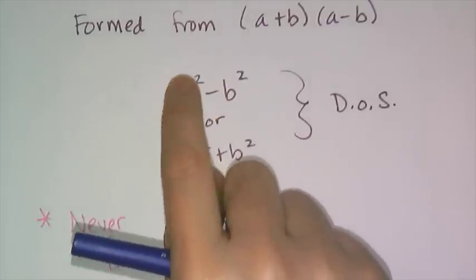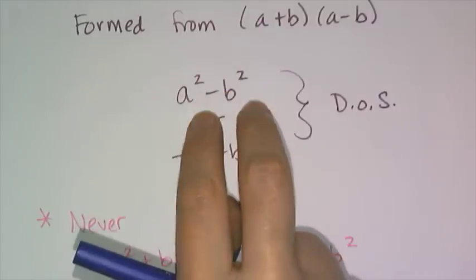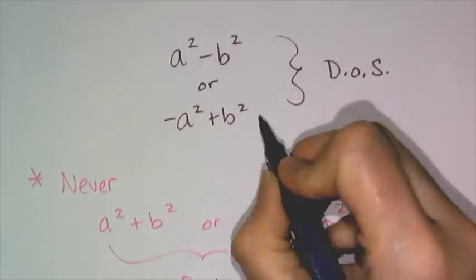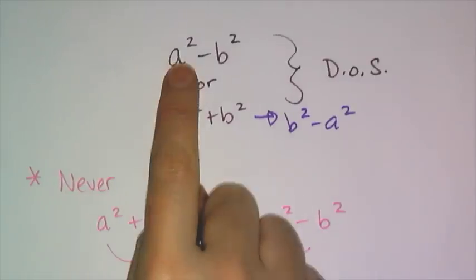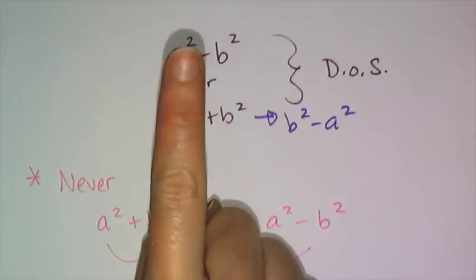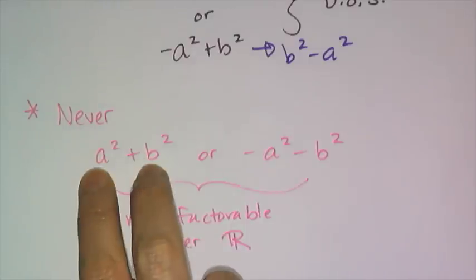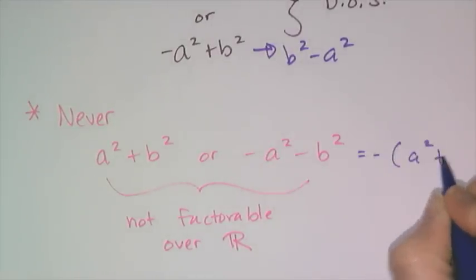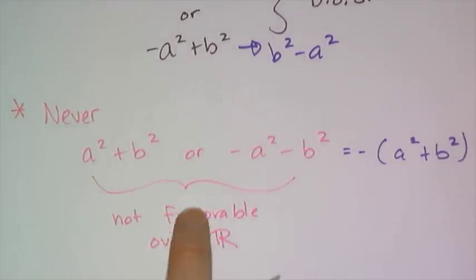It's called difference of squares because you literally have two squares, a squared and b squared, and you're finding the difference. You can also write it as b squared minus a squared. Importantly, it is never, ever a sum of squares — a squared plus b squared is not factorable this way. Negative a squared plus b squared is also not a difference of squares. These two forms are not factorable over the real numbers at all — only over imaginary numbers, which you'll learn in algebra 2.